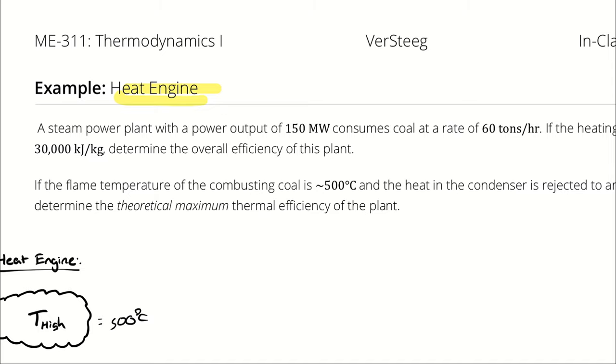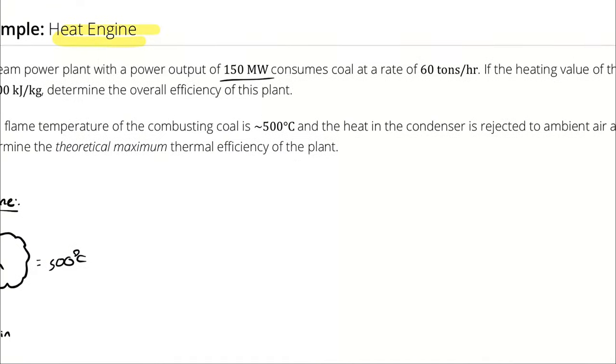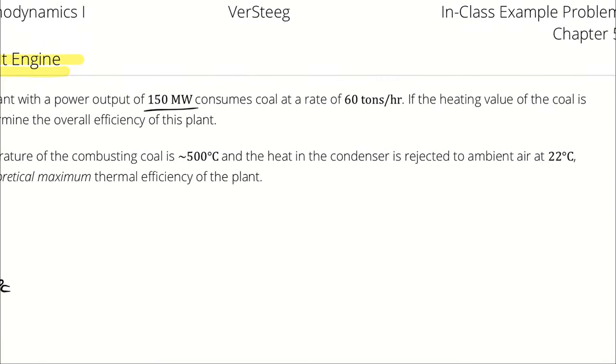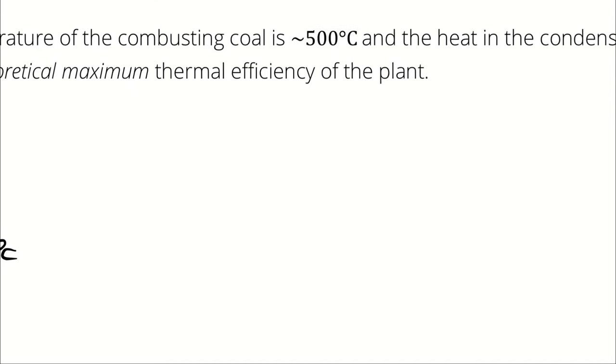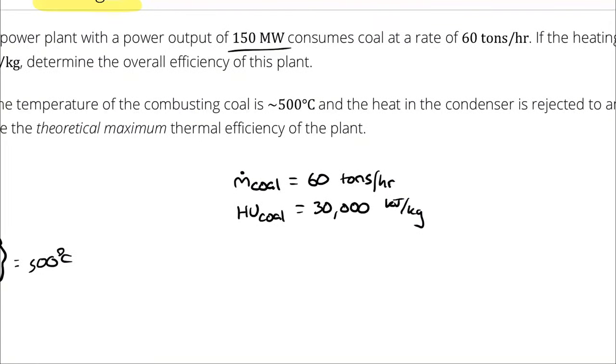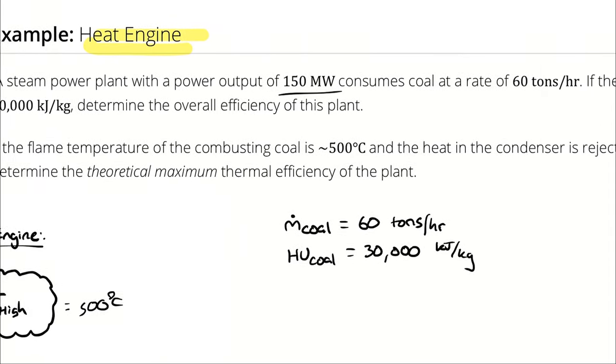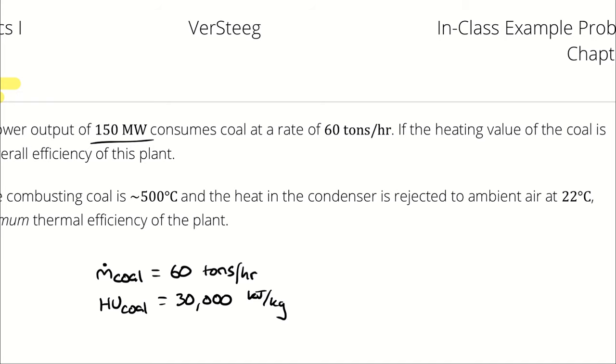I know that the plant has a power output of 150 megawatts, which is going to represent the net work output. It is getting its heat by burning coal. We're consuming coal at a rate of 60 tons per hour, which is a mass flow rate. And we were told the heating value of the coal is 30,000 kilojoules per kilogram.